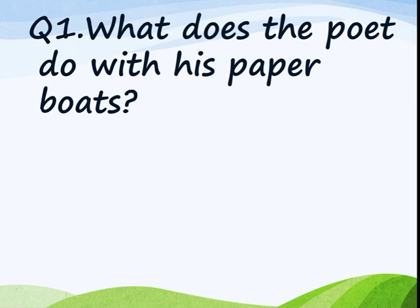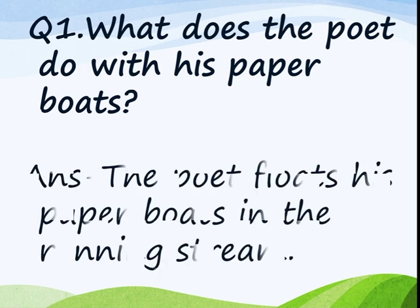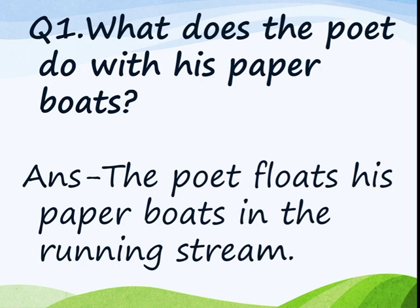Question number 1: What does the poet do with his paper boats? He used to float his paper boats in the running stream. So we will write: the poet floats his paper boats in the running stream. After writing this answer, you will draw a line with a pencil color.